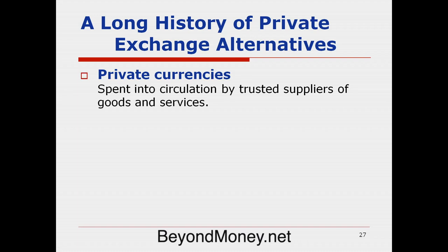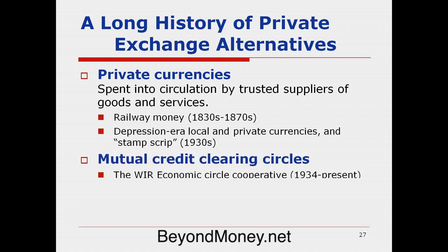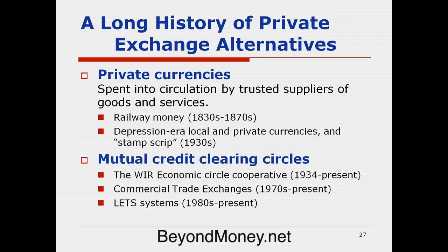We've seen many private currencies put into circulation, and lots of community currencies circulated in the last 30 years. Going back historically to the 19th century in Europe, there were railways that issued railway money redeemable for passage on passenger trains. There was depression-era scrip. We've had mutual credit clearing circles like the WIR Economic Circle Cooperative, started in the midst of the Great Depression in 1934. We have commercial trade exchanges — scores of these operating around the world. We've had LETS systems, many of which are still operating.